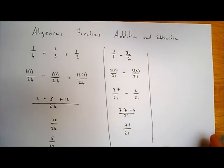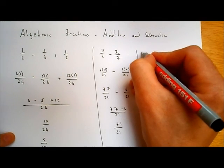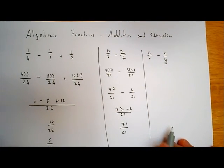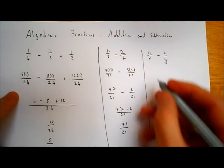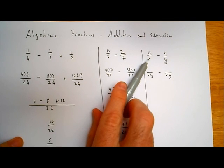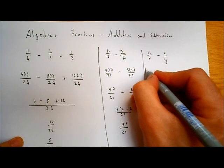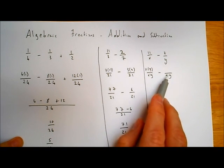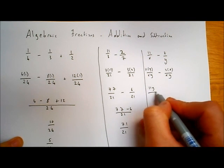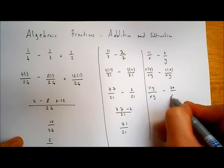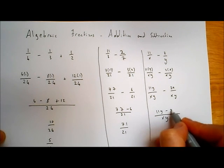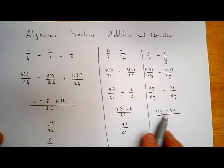So let's do that with algebraic fractions. Say we have 11 over x minus 2 over y. To find the common denominator, I just multiply the denominators: x by y, so xy is my common denominator. How many x's are in xy? There are y of them, so I multiply the top by y, giving 11y. And how many y's are in xy? There are x of them, so I multiply the top by x, giving 2x. So I get 11y over xy minus 2x over xy, which simplifies to 11y minus 2x all over xy. I can't go any further because I can't subtract 2x from 11y as they're different terms.